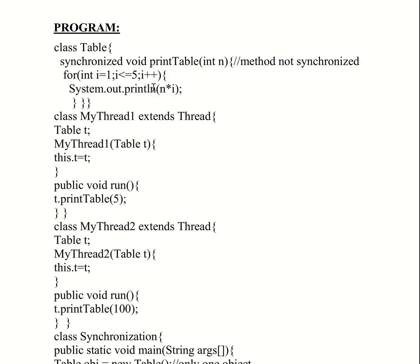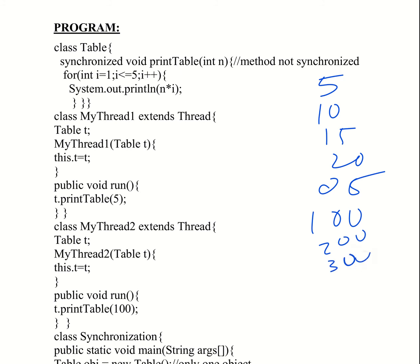So for the table of 5: 5 into 1 is 5, then 10, 15, 20, 25 — the first five multiples are 5, 10, 15, 20, 25. And for the table of 100: 100, 200, 300, 400, 500. That is the printable multiplication table.